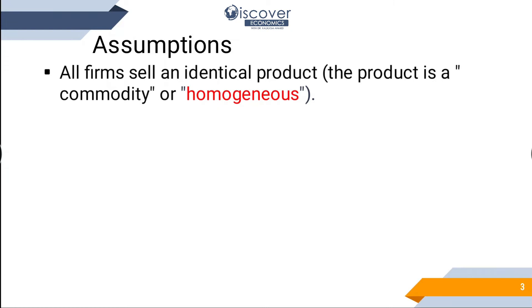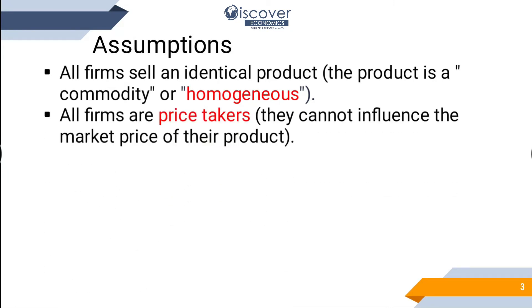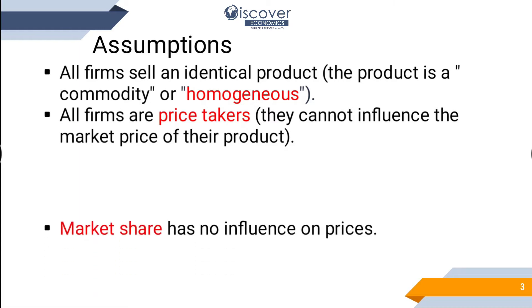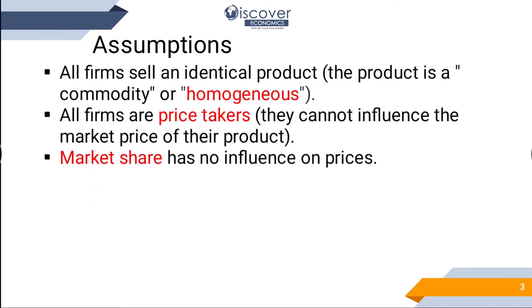Now let's see the assumptions. First of all, price takers. Price takers are like: you have the forces of demand and supply, which we call market forces, and they determine prices in the market. There is no difference between your supplies. Market share has no influence on prices. Whether you have 100 acres of land or 5 acres of land, there is no difference in market prices.